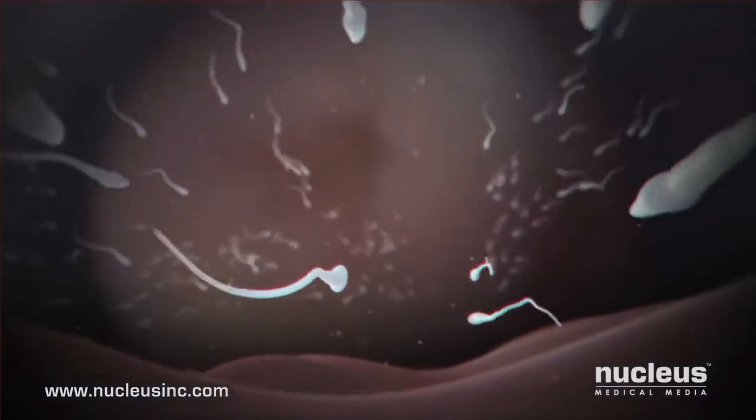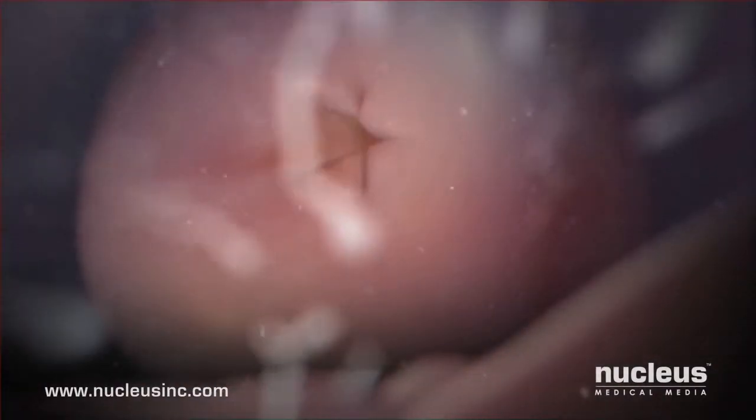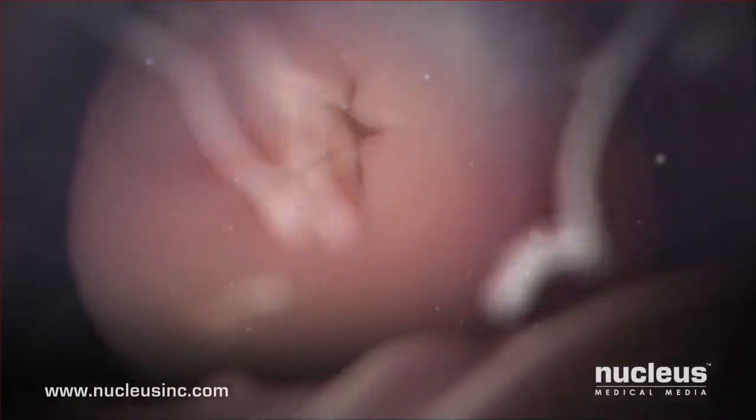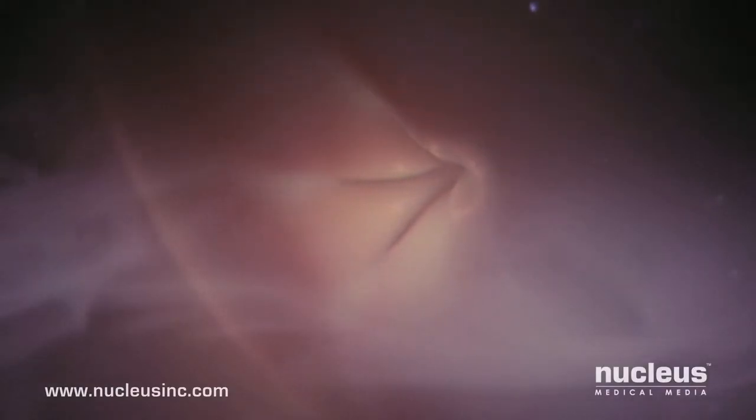Next, the sperm must pass through the cervix, an opening into the uterus. Usually, it remains tightly closed, but here the cervix is open for a few days while the woman ovulates.